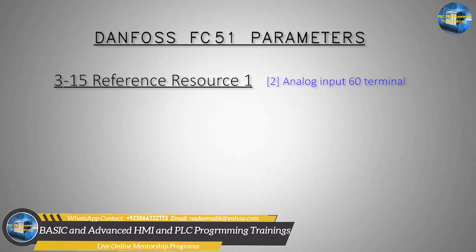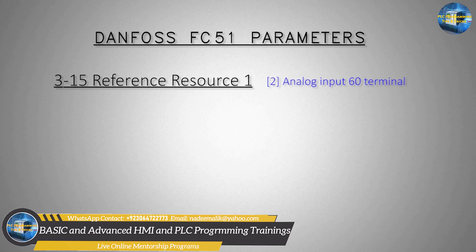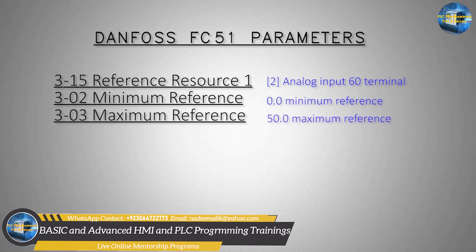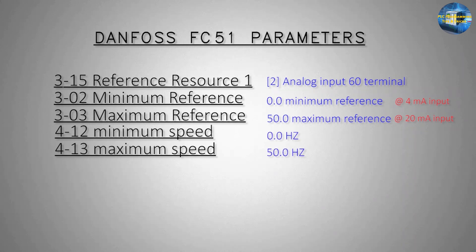Next we have to set some parameters in the FC51 inverter to be able to send and receive analog signals. First we set parameter 3-15 to 2, which configures terminal 60 of the VFD as analog input speed reference. Next we set parameter 3-02 minimum reference as 0.0 and parameter 3-03 maximum speed reference as 50.0. At 4 milliamps the VFD runs at 0.0 Hz, and at 20 milliamps at terminal 60 the motor runs at 50 Hz.